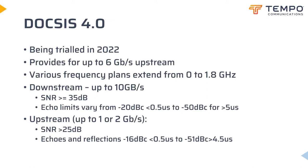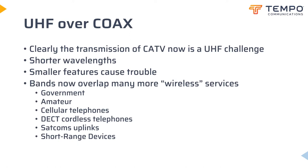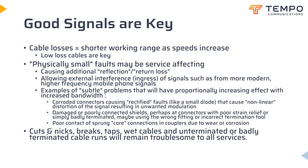UHF is the band from 300 to 3000 MHz, or 3 GHz. If you transform a signal to an electromagnetic wave using an antenna, these signals have wavelengths from 1 meter to 1 tenth of a meter. There are more sources of interference that can disrupt a signal, and smaller features on a transmission line can affect those signals. Signal loss over any particular length of cable increases as frequency increases. Smaller features and points of damage can lead to troublesome interference and reflection.